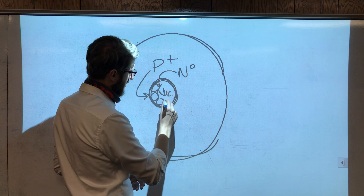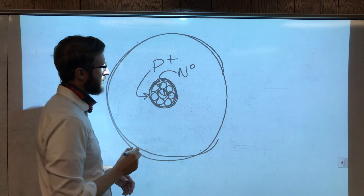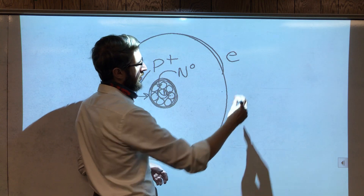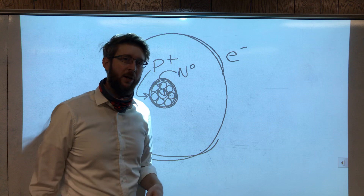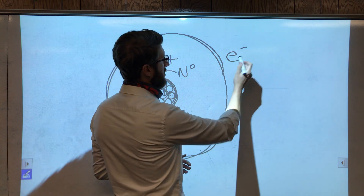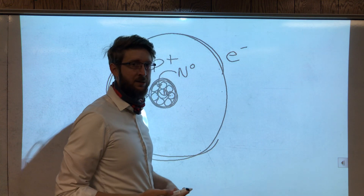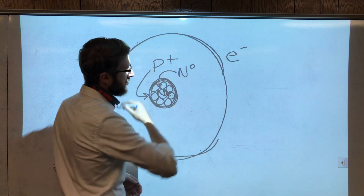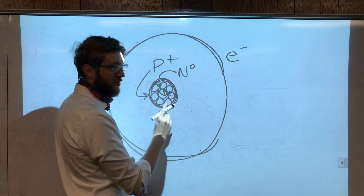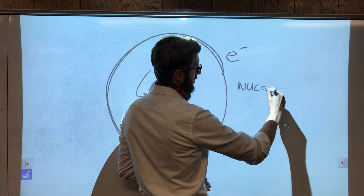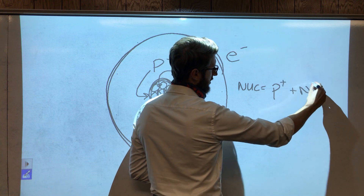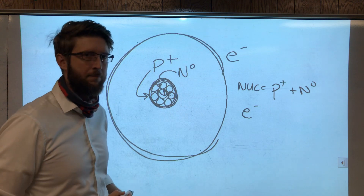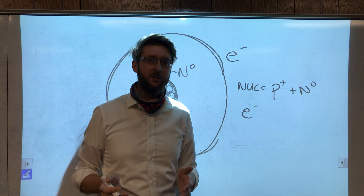Some of the particles in the nucleus will be protons and some will be neutrons. Around the outside are these teeny tiny things called electrons — lowercase e-minus — because e stands for electron and the minus is the charge it has: it's negative. So notice that all the protons with positive charges are in the nucleus, and all the electrons with negative charges are around the nucleus. The nucleus equals protons and neutrons, and around the nucleus are the electrons — those are the three basic building blocks of an atom.